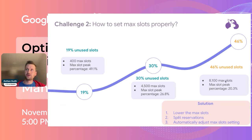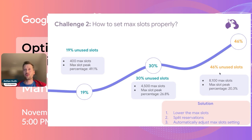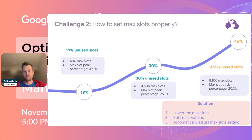Here is another type of customer where they have a much higher max slot setting — more than 8,000. The max slot peak percentage is just 20 percent, and you can see that this waste could go up to almost 50 percent. So for this customer, almost half of what they are paying for BigQuery is waste from the autoscaler. This is quite a significant issue.